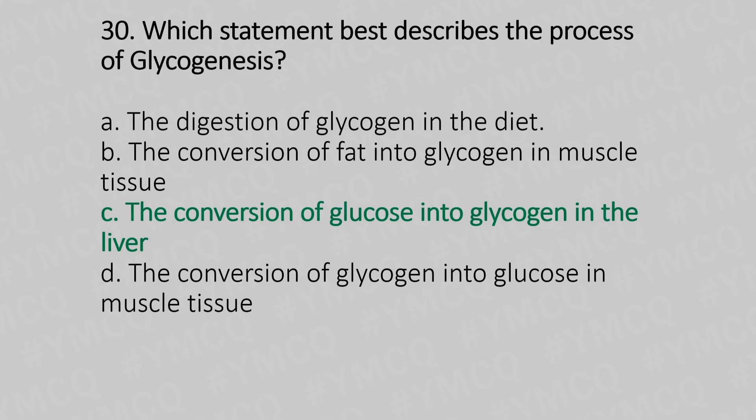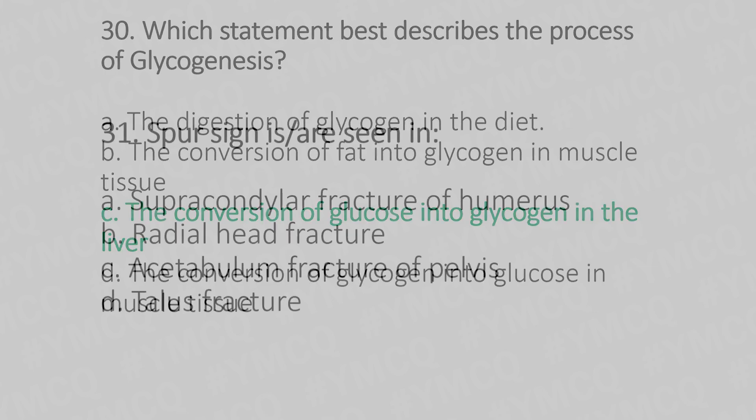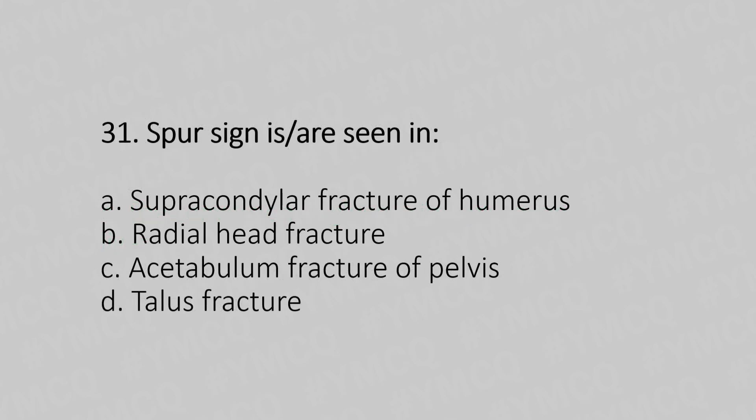Now let's move to question number 31. Spurling's sign is seen in: Option A: supracondylar fracture of the humerus. Option B: radial head fracture. Option C: acetabulum fracture of the pelvis. Option D: talus fracture. And the answer is Option C — acetabulum fracture of the pelvis.